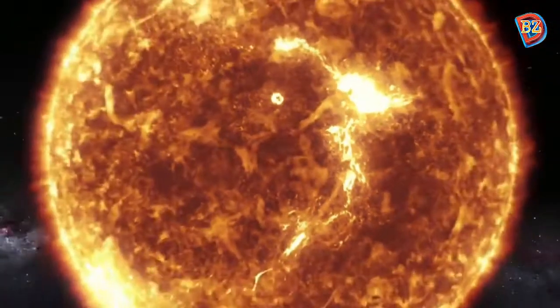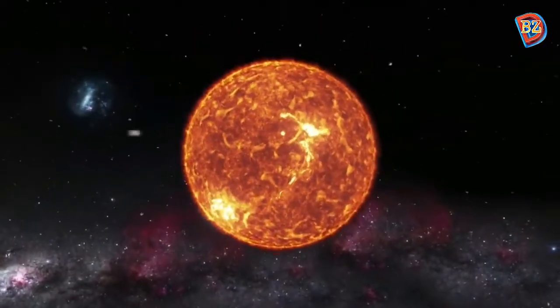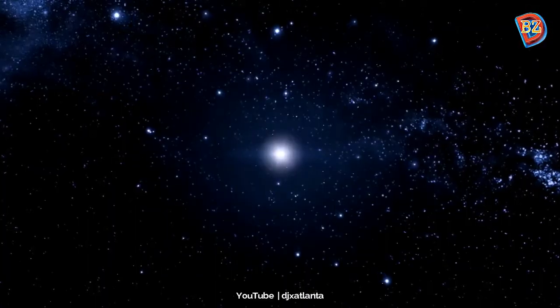The Sun will get smaller and smaller, eventually becoming what we call a white dwarf, and slowly cool down to the background temperature of the universe.